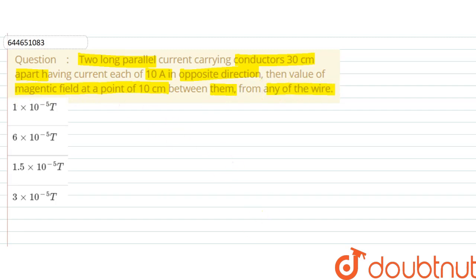So let us say this is wire one and this is wire two. The distance between them is 30 centimeter and the current is flowing in opposite directions, that is 10 amperes each.